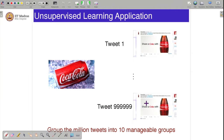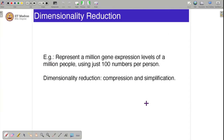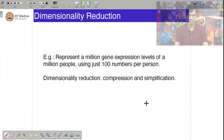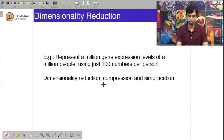That is done by the human, which in this case would be you. That is the reason why unsupervised learning is typically not an end in itself but rather a pre-processing stage used by other processes. Here is one concrete example of unsupervised learning: dimensionality reduction. The goal of dimensionality reduction is compression and simplification.